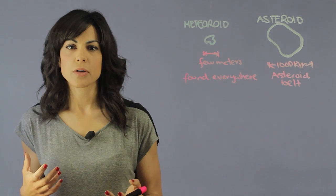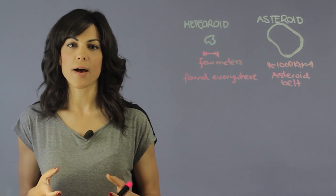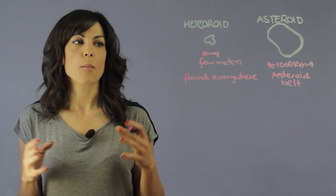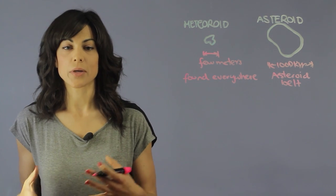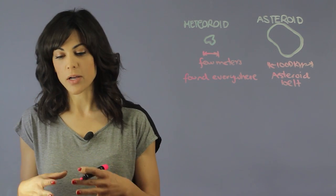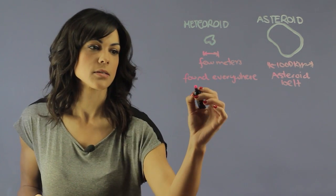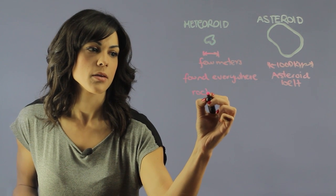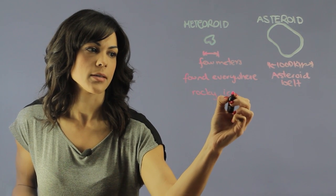Now another similarity between meteoroids and asteroids is that they both have wild compositions. The main body of a meteoroid and an asteroid is rock and ice and a couple of gases. So it's rocky and icy.